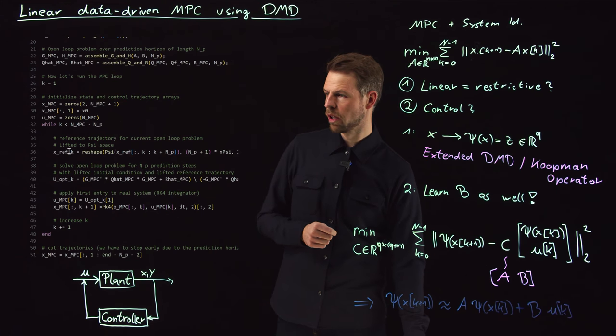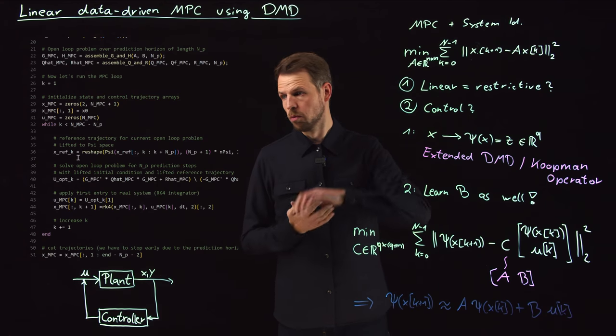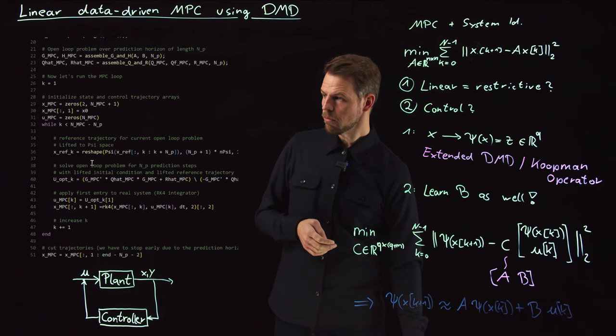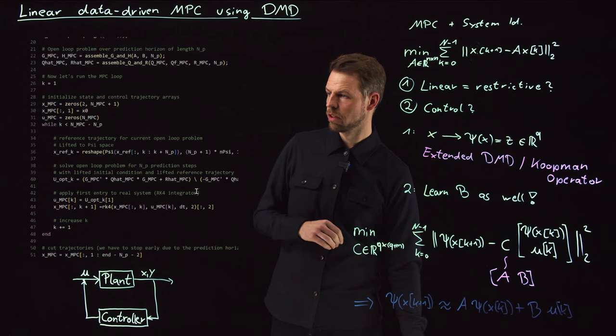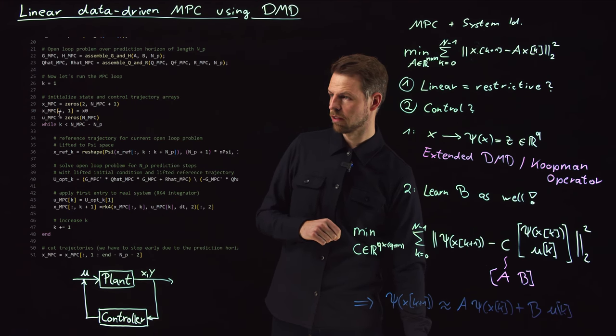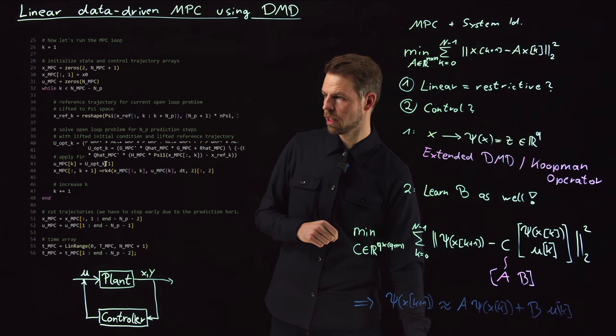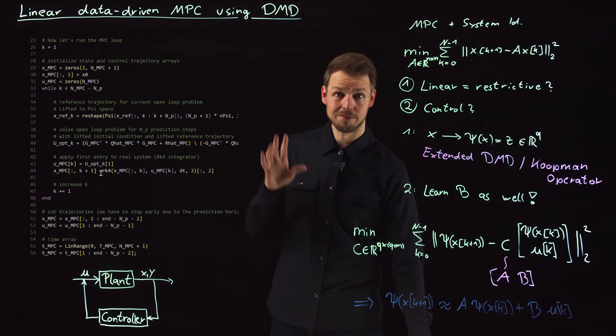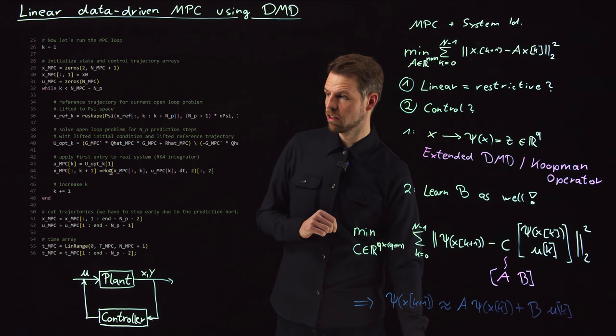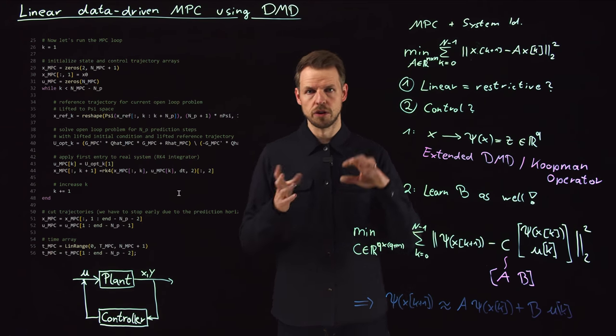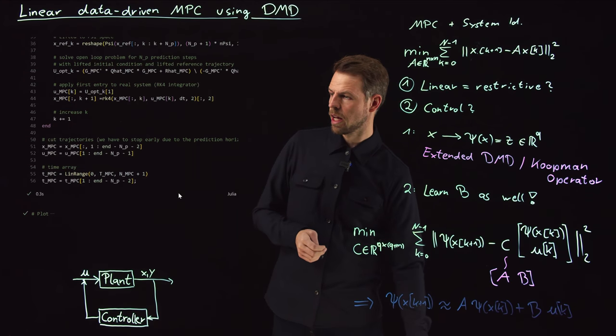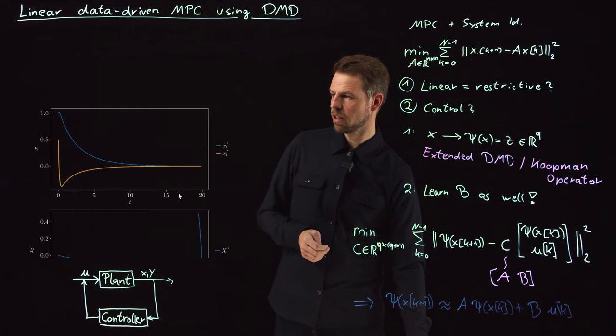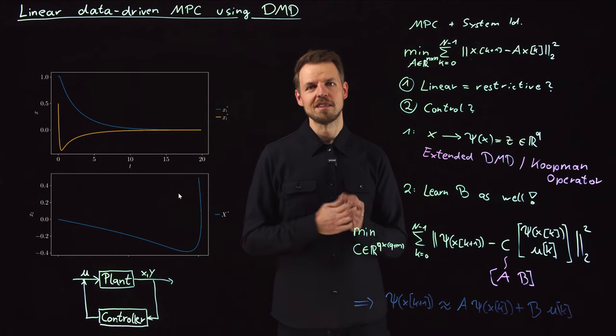And then we have the MPC loop exactly as in the previous video. So all we need to do is, we identify the reference state, which is zero in this case, so we just want to move the system to the origin. And then solve this linear system given the current initial condition, which is X MPC at time step K. And then as before, we apply the first entry to the real system, but now the real system is not our linear system. The real system is the Runge-Kutta integrator of the original nonlinear Duffing oscillator. And what you see is actually quite surprising that this works really nicely.